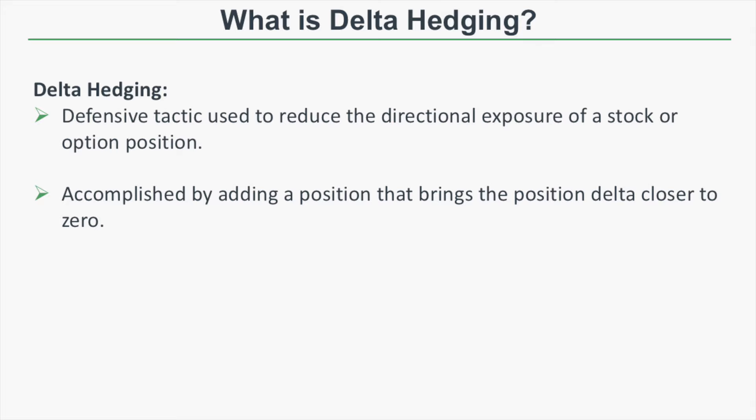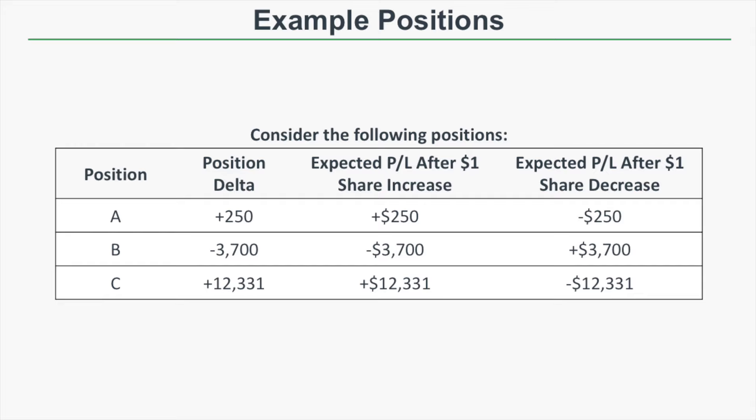So what is Delta Hedging? Delta represents the directional risk of a stock or option position. In the trading world, the term hedging refers to reducing risk. So when we put those two terms together, Delta Hedging is a practice of reducing directional or Delta risk. It's a defensive tactic used to reduce directional exposure, done by adding a position that brings the position Delta closer to zero. If you have a positive position Delta, you add positions with negative Delta, and the opposite is true for a negative position Delta.